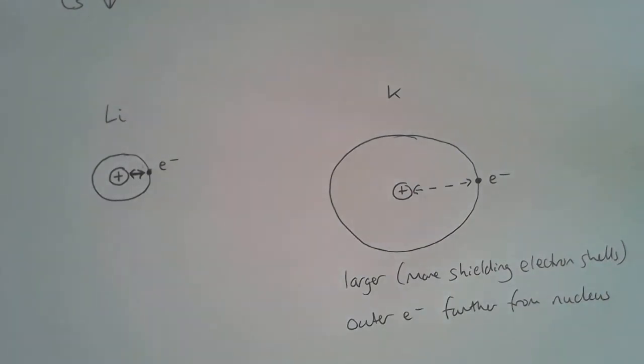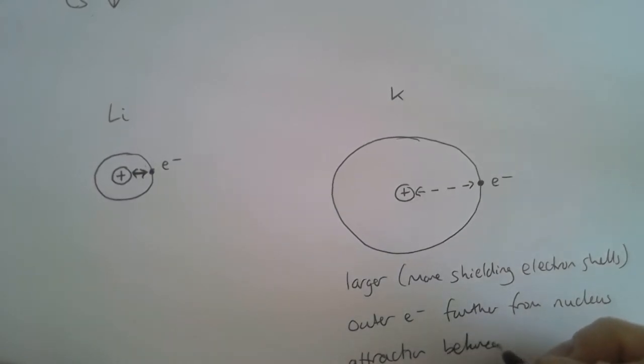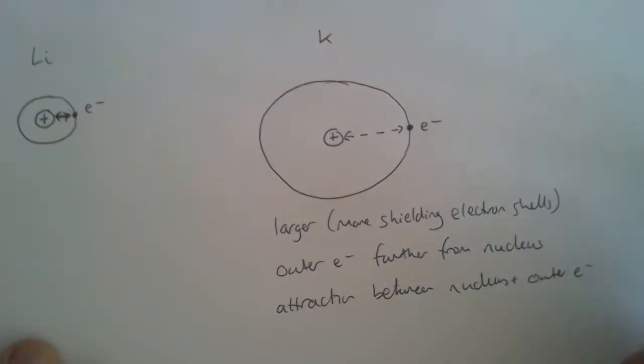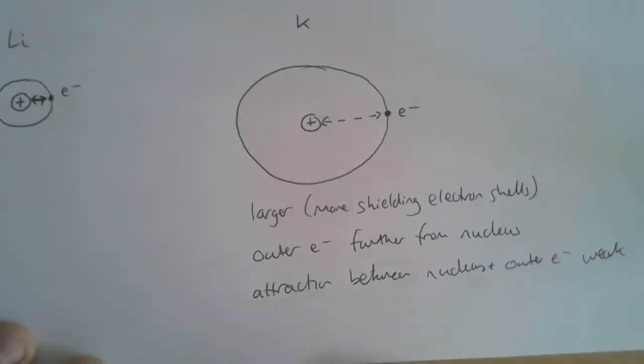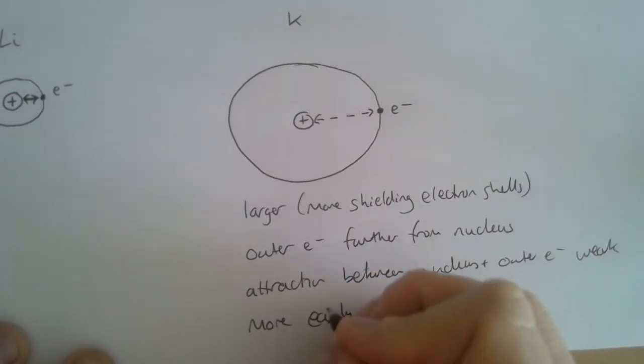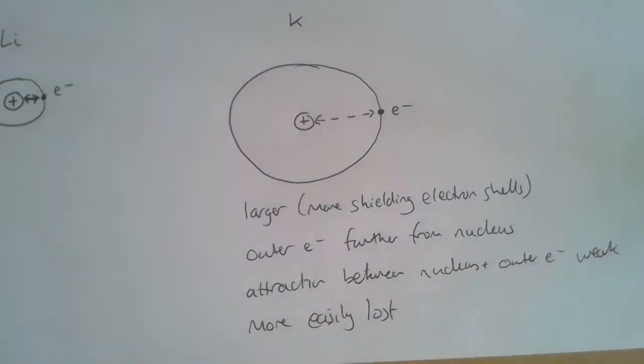If it's further from the nucleus, the attraction between the nucleus and outer electron is weak. That means it's more easily lost. So that outer electron is more easily lost in potassium.